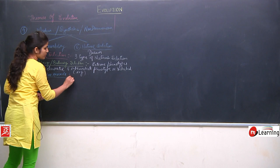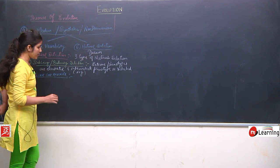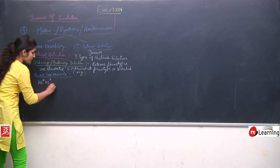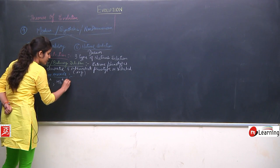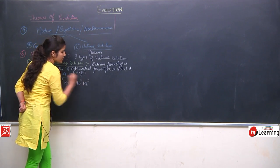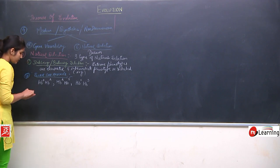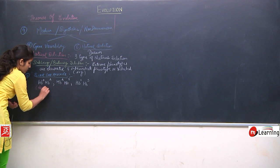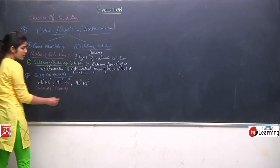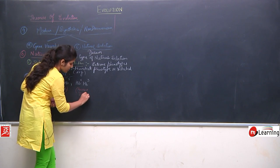Sickle cell anemia is an autosomal recessive disorder and it has 3 genotypes. The first is HbA HbA (homozygous dominant — normal), the second is HbA HbS (carrier or intermediate), and the third is HbS HbS (homozygous recessive — diseased).